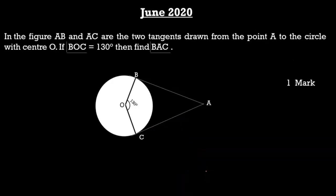The second question from June 2020 is for one mark. In the figure, AB and AC are the two tangents drawn from point A to the circle with center O. If angle BOC is equal to 130 degrees, then find angle BAC. Angle BAC is equal to 180 minus 130, which equals 50 degrees. So angle BAC is 50 degrees.